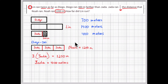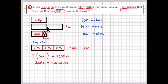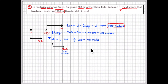Now there is a problem with this drawing: Noah ran 1,200 meters and Lynn ran 1,400 meters, but in the drawing Noah appears farther out, making it look like Noah ran farther than Lynn. But we know that Lynn actually ran 200 meters farther than Noah, so this drawing should be adjusted to show that Lynn's run is farther than Noah's run.